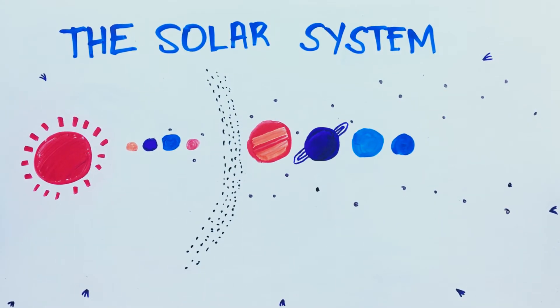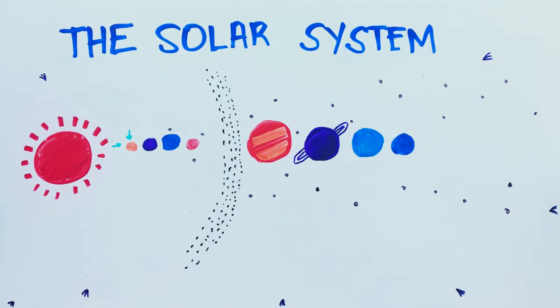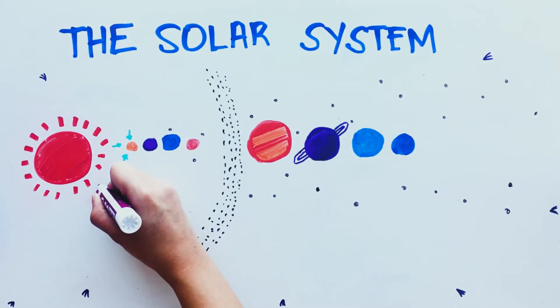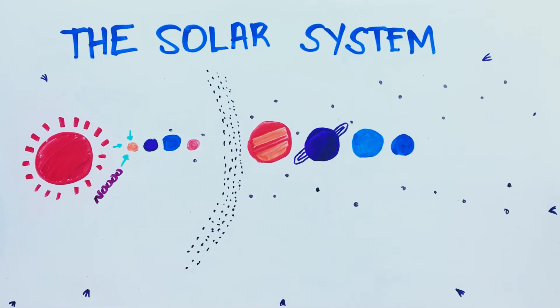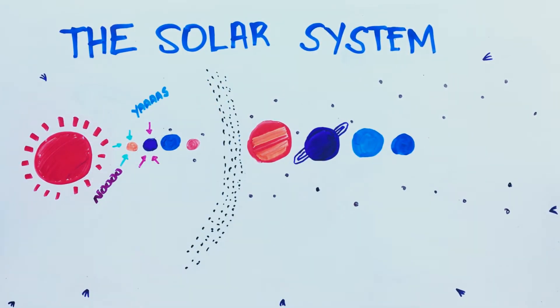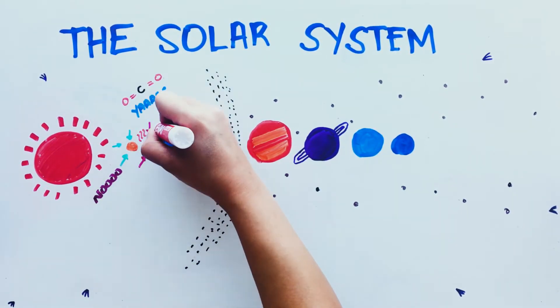The hottest planet isn't closest to the Sun. Most people think that Mercury, being closest to the Sun, is the hottest planet. But it doesn't have an atmosphere, which means it doesn't have anything to hold the heat in. This makes Venus the hottest planet in our solar system because of its thick atmosphere of carbon dioxide that traps in the heat.